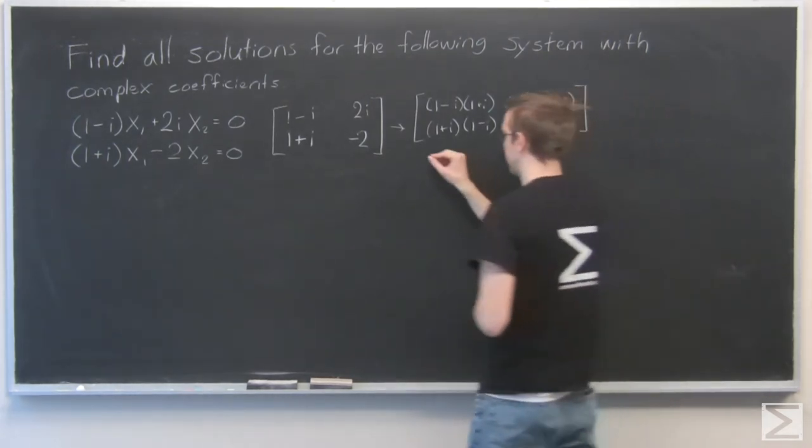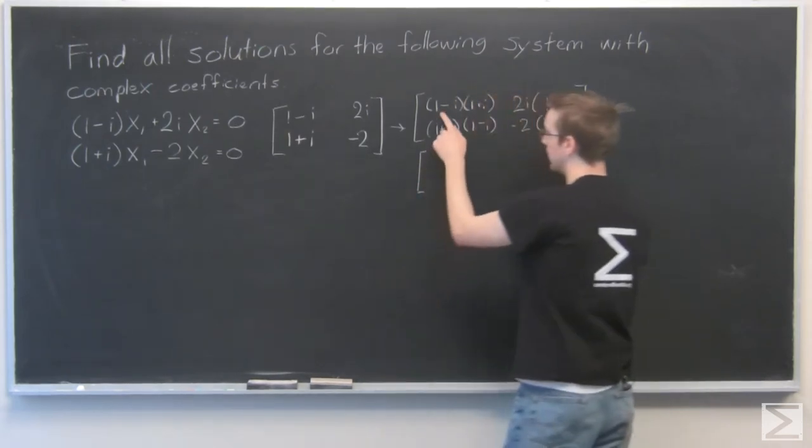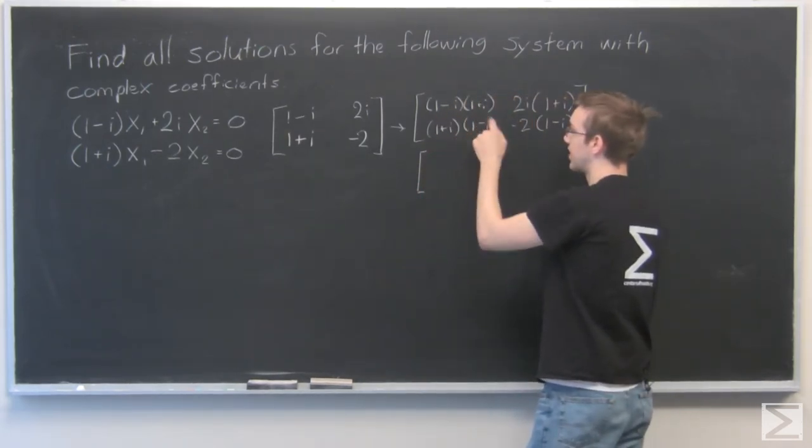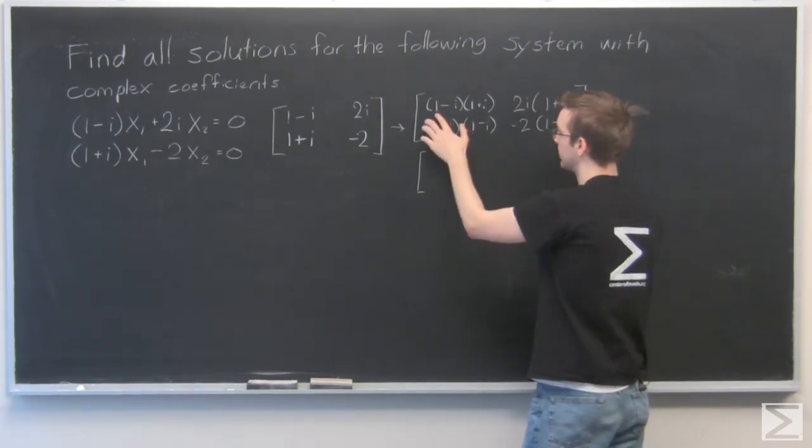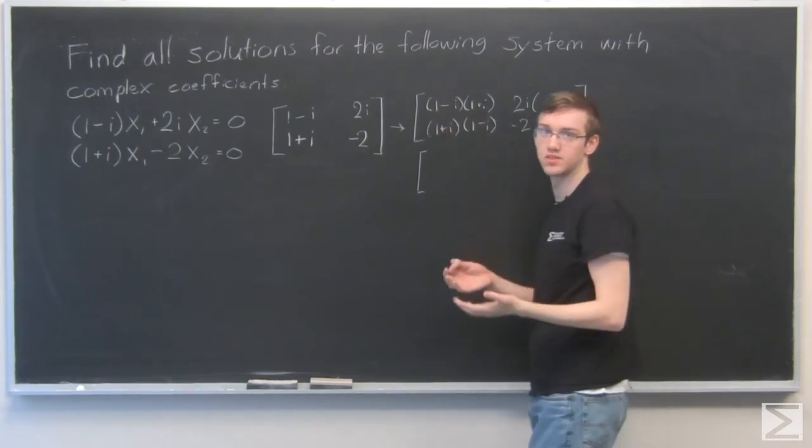I'm going to simplify this. 1 minus i times 1 plus i - that's a sum and difference formula, so the answer will be 1 squared minus i squared.